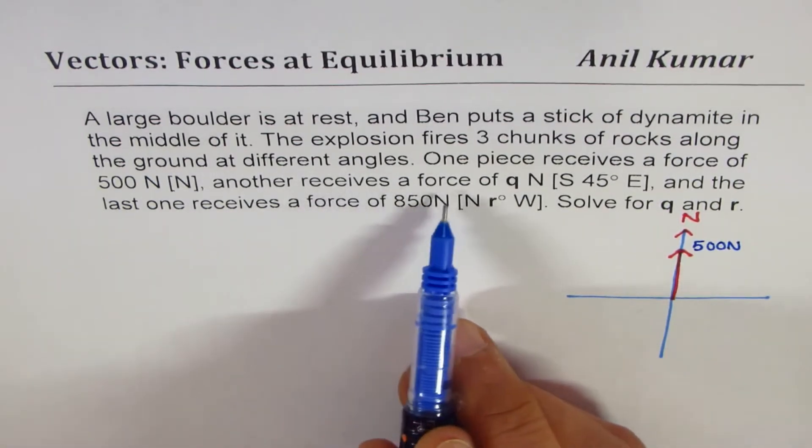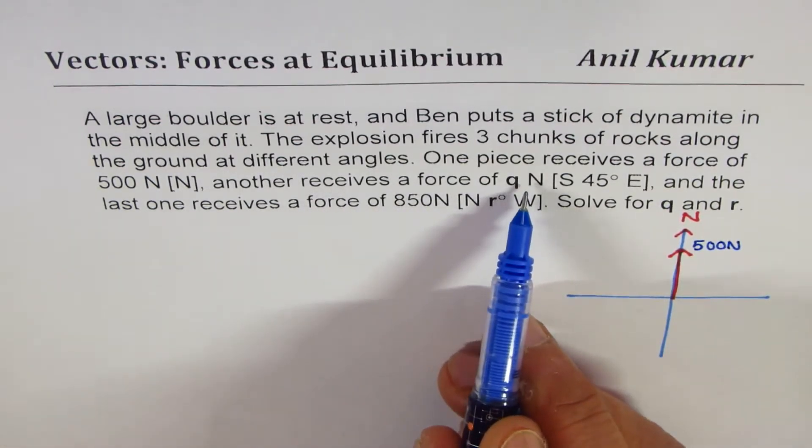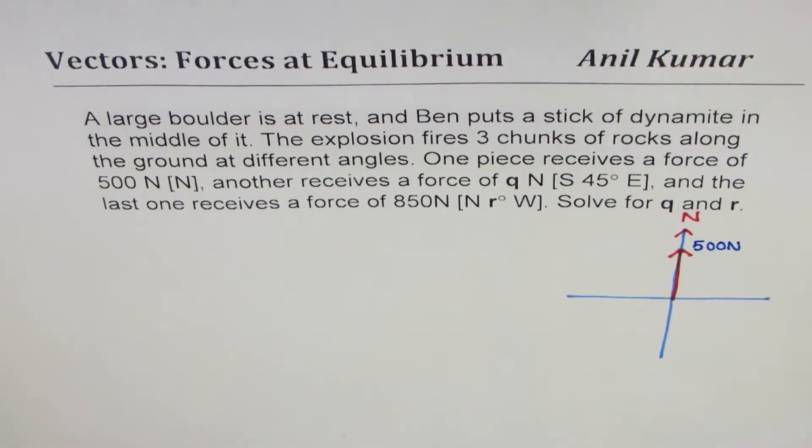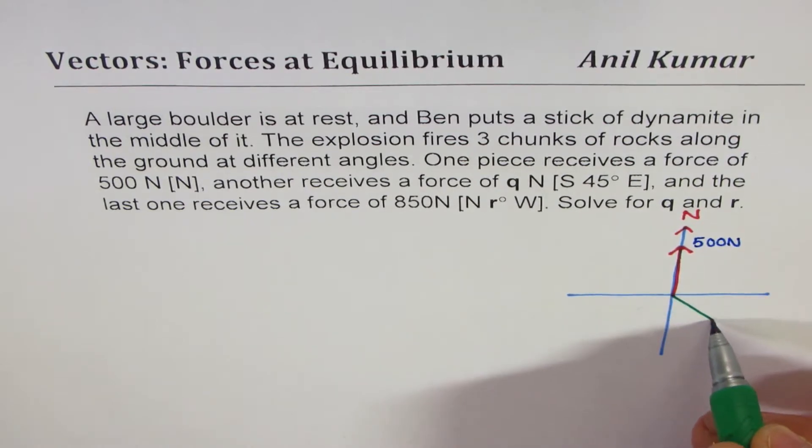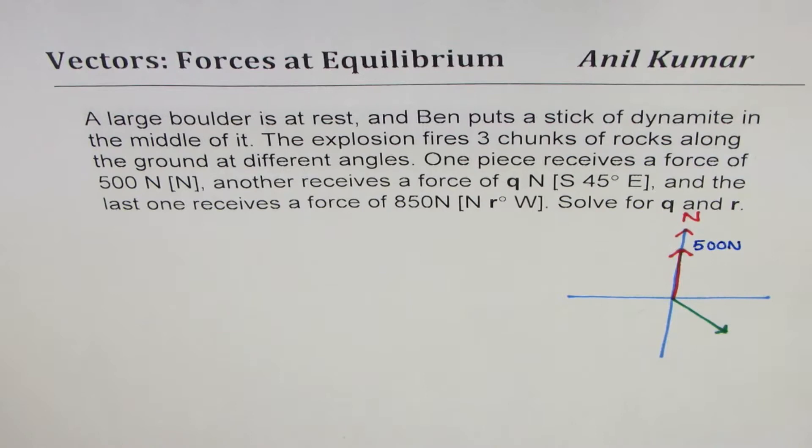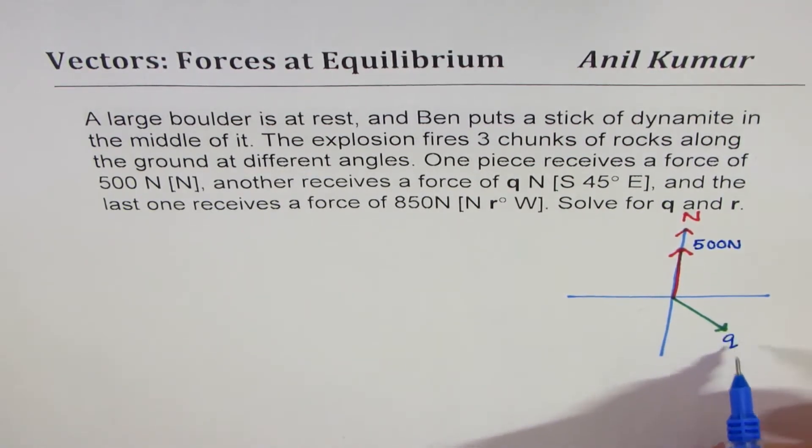Another receives a force of q newtons 45 degrees east of south, so 45 degrees right in the middle east of south. Which is q newtons, so we don't know how much, but it is q newtons, and this angle is 45 degrees.